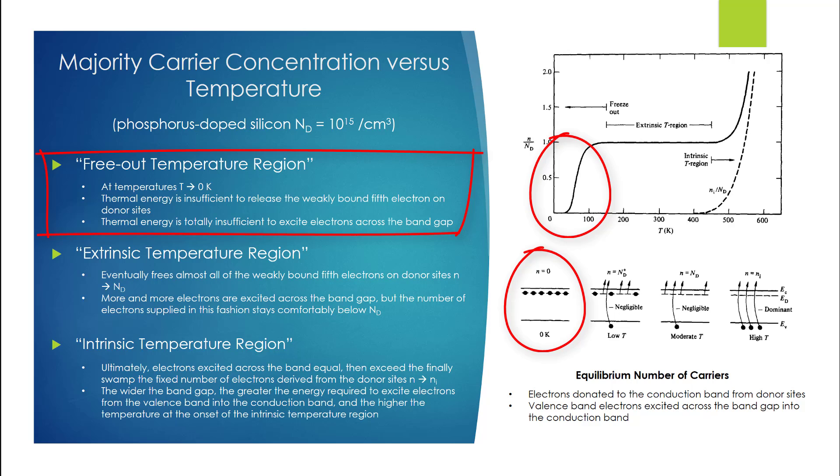Hence, N = 0 at T = 0K. Slightly increasing the material temperature above T = 0K frees some of the electrons weakly bound to the donor sites. Band-to-band excitation, however, remains extremely unlikely, and therefore the number of observed electrons in the freeze-out temperature region equals the number of ionized donor sites, such that N = Nd+.